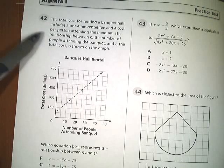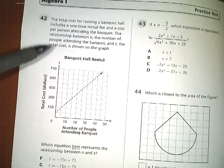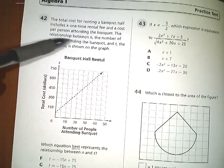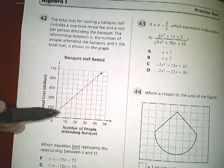The total cost for renting a banquet hall includes a one-time rental fee and a cost per person attending the banquet. The relationship between the number of people attending the banquet and the total cost is shown on the graph. And here's the graph here.